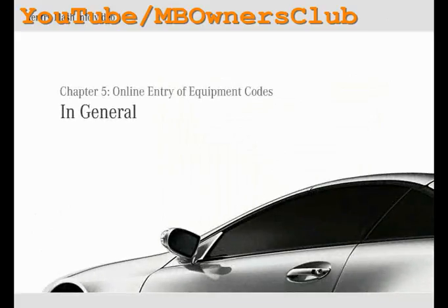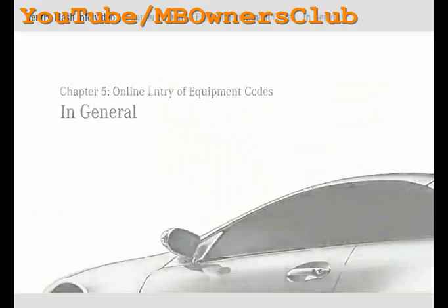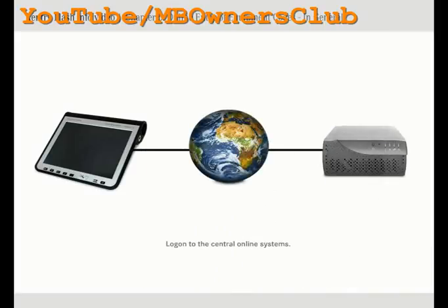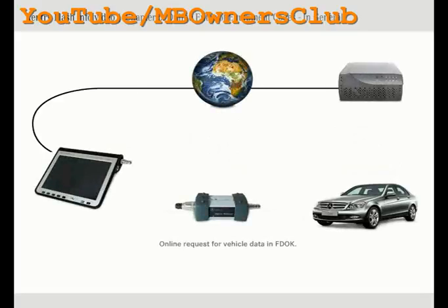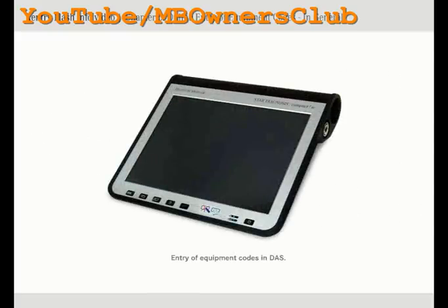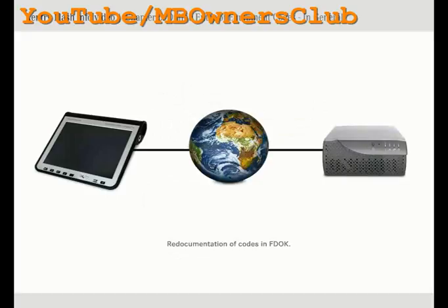In the following example you will find out more about how to enter equipment codes online in general. At the beginning of this process you also log on to the central vehicle documentation systems with your SentryFlash username, user ID and password. Next there are checks to see if systems respond. Next the latest vehicle data is determined in FDOC. You can enter the required equipment codes in DAS. A check is performed in the central vehicle database to ensure that the codes are permitted for the vehicle in hand. If so, the changed codes are re-documented automatically online in FDOC. For documentation purposes, the changed codes are also included in the repair order.